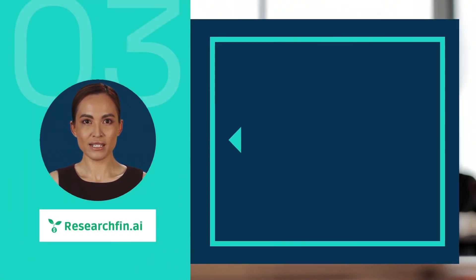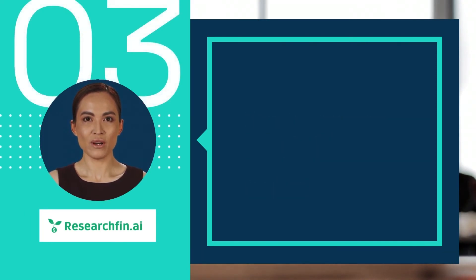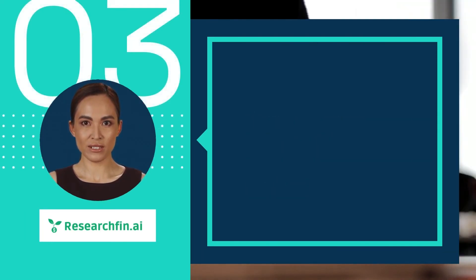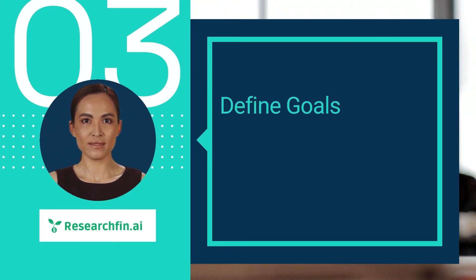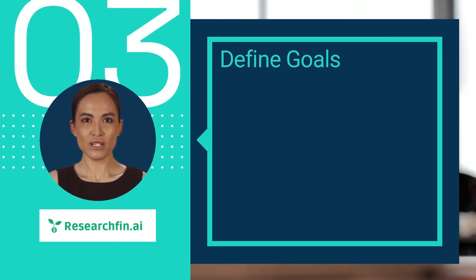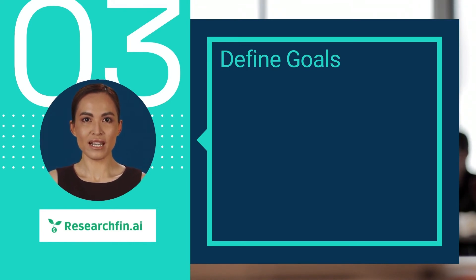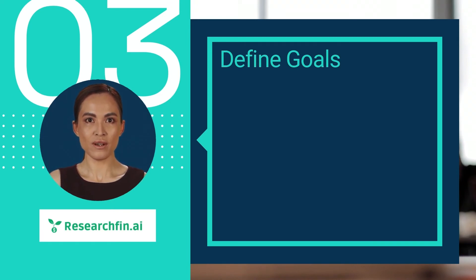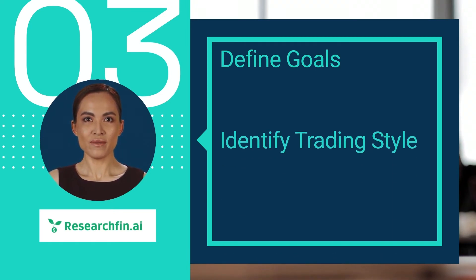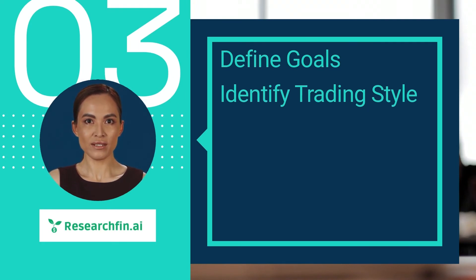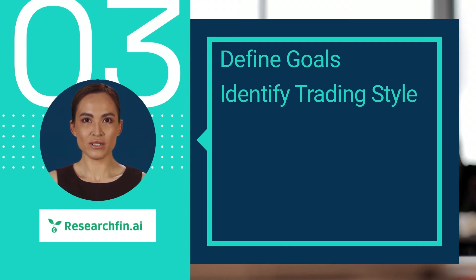How to overcome biases and emotions in trading? The five steps are: first, define the goals of trading — whether it is to generate a full-time income, augment current income as a side hustle, or grow wealth. The goals differ based on the personal and financial situation of traders. Second, identify the trading style that aligns well with the goals, such as day trading, swing trading, or position trading. It is important that the trading style also matches the risk tolerance of the trader.